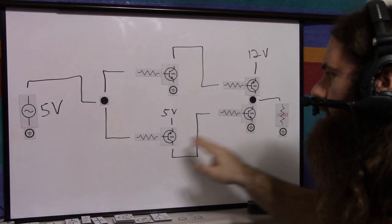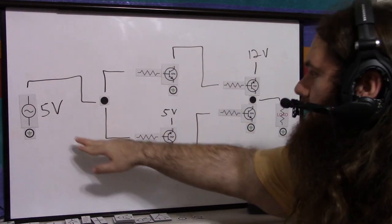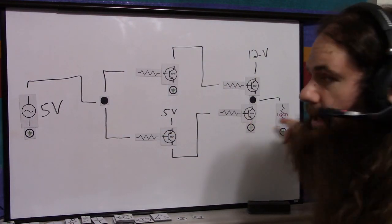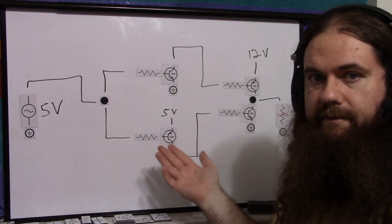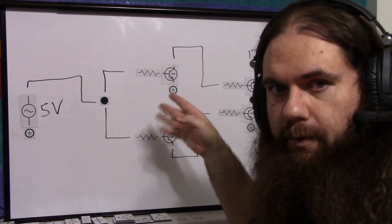And then if I just had this NPN, which could be driven by the 5 volt load, high here would turn on this NPN, so they'd both be on, so I had to invert it somehow. So there's the fourth transistor.